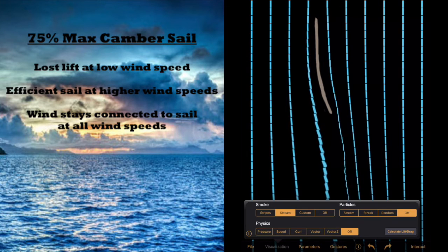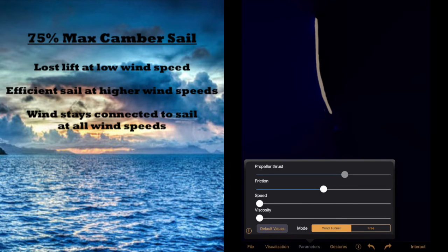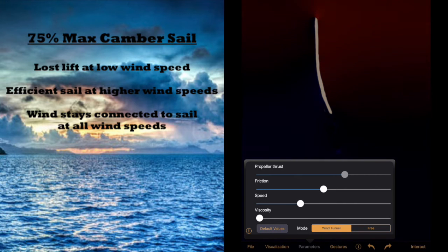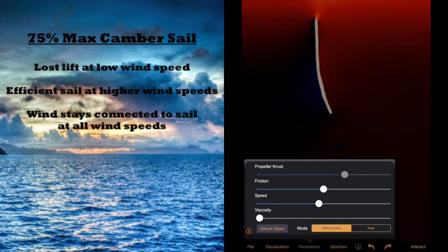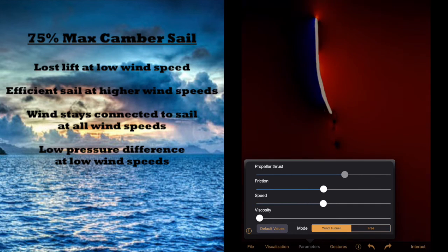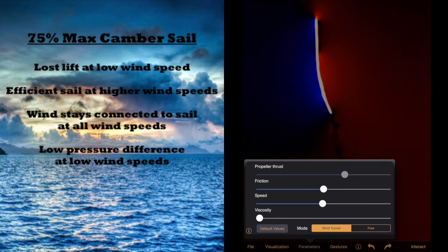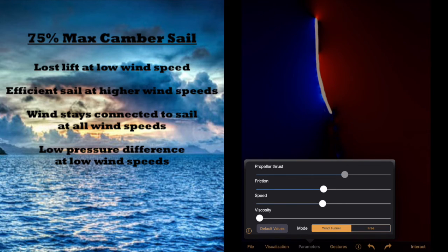To understand the inefficiency of this sail shape at low winds, we need to switch to the pressure view. With the wind speed at its lowest setting, there is effectively no high pressure or red showing on the right hand side of the sail, which indicates lost potential forward momentum due to not having enough camber in the sail. As we increase the speed, the high pressure areas in red start to appear and the blue ones on the left hand side intensify, showing that the sail is operating more efficiently at medium wind speed.